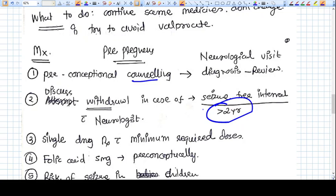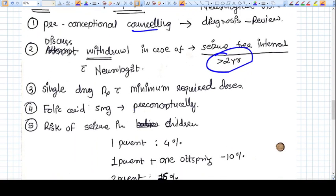There are different kinds of seizures. Some seizures have a very higher rate of relapse if you stop the drug. In those cases you should not stop the drug. But leave this thing to the neurologist. He will decide whether to discontinue or not. Single drug treatment with minimum required dose should be preferred. Folic acid should be given at higher doses like 5 mg per day, at least 2 months before the conception.